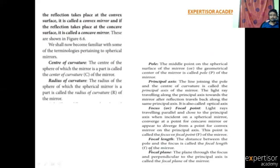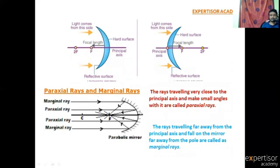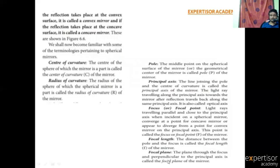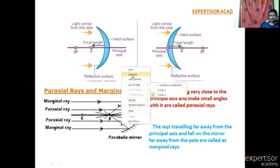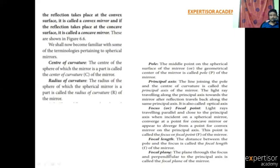Focal Length: the distance between the pole and the focus is called the focal length of the mirror. Here, this is the focus point and this is the pole — the distance between pole and focus is the focal length. Next, Focal Plane: the plane through the focus and perpendicular to the principal axis is called the focal plane of the mirror.